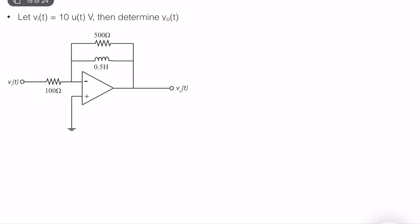In this video, we will analyze the step response behavior of an op-amp RL circuit, which integrates an op-amp with an inductor and resistor. It is given that V_I(t), the input voltage, is equal to 10·u(t). This means that for T less than 0, V_I equals 0 volts, and when T is greater than or equal to 0, V_I equals 10 volts.